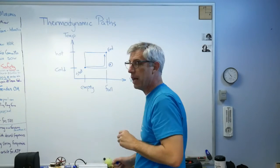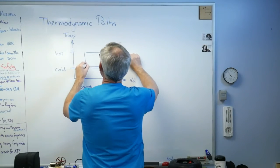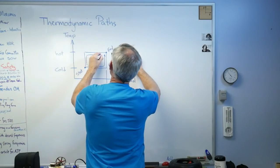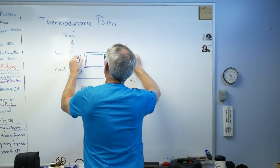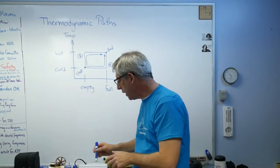The obvious path is to fill a pan and then heat the water. We'll just call that path A. That's one path to get you from the beginning to the end.